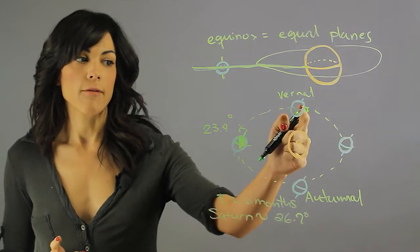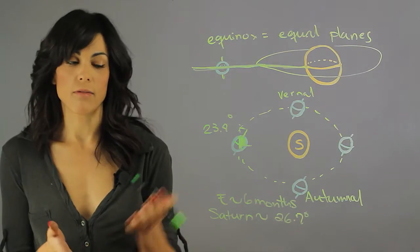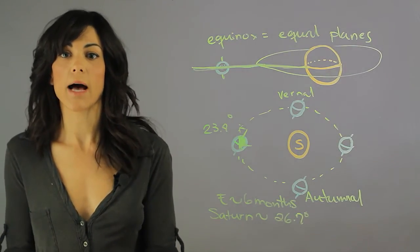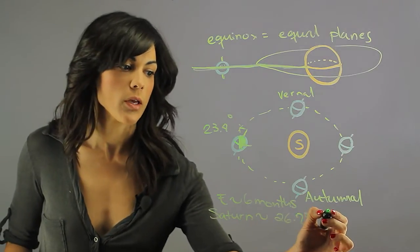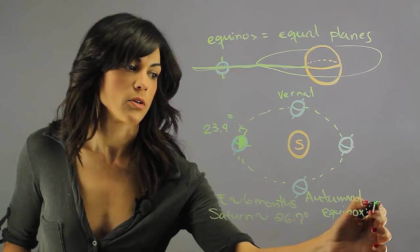Therefore, if this is six months for a 12-month orbit, Saturn will have an equinox every 15 years, which is half of its orbit. So equinox occurs every 15 years.